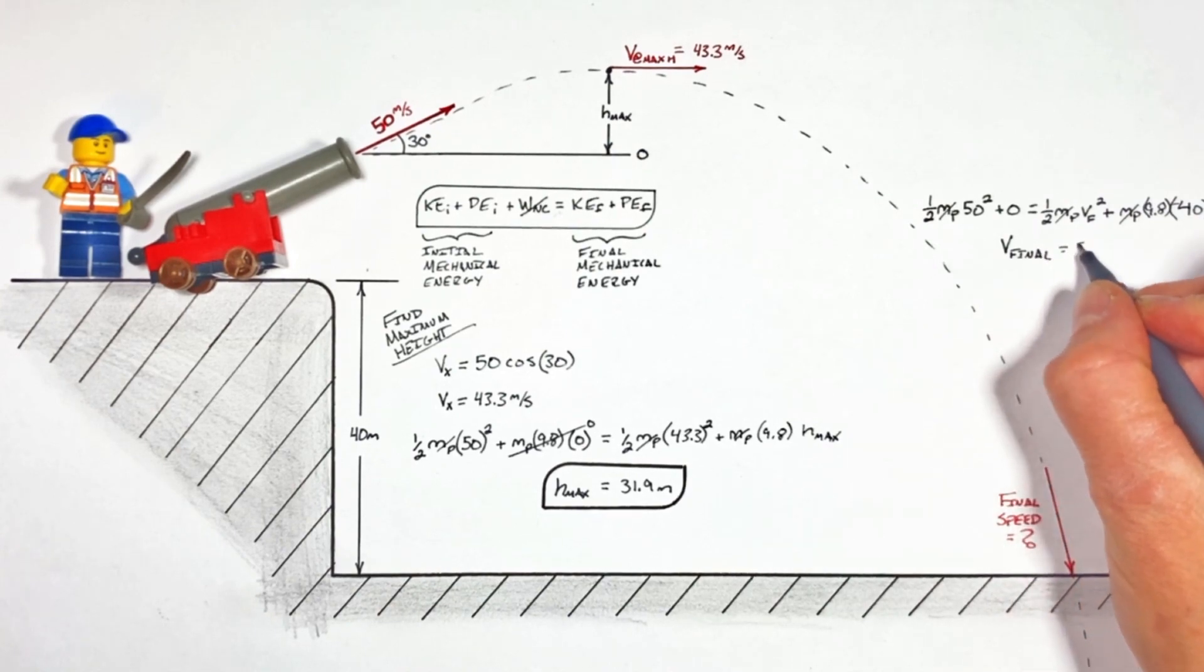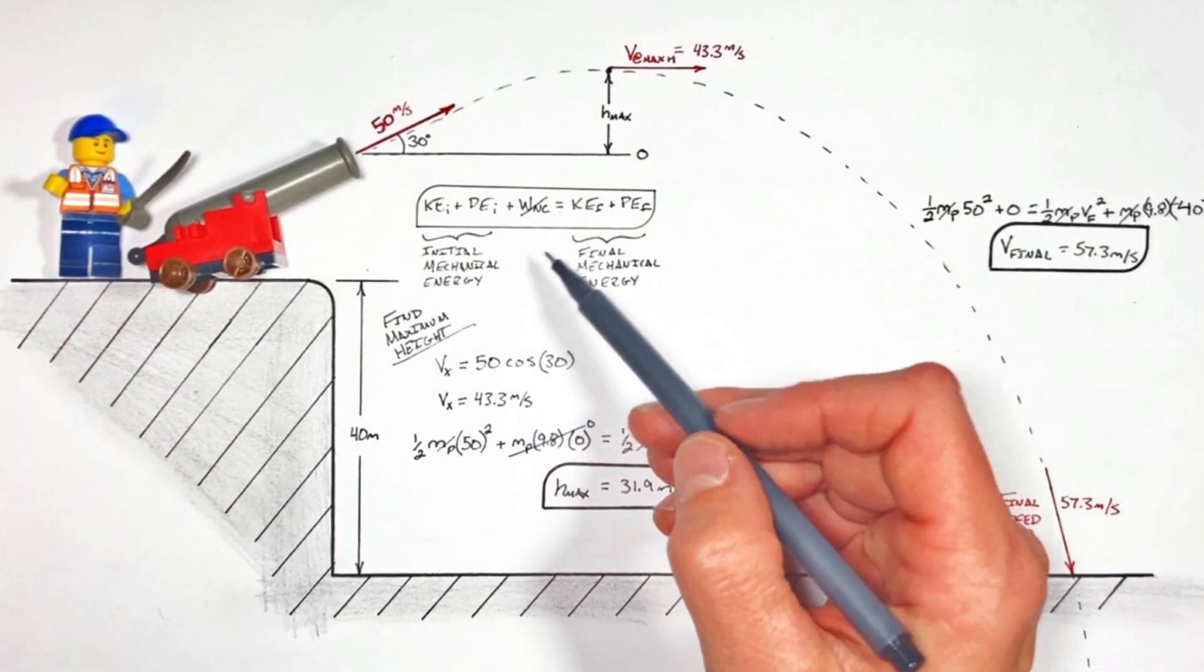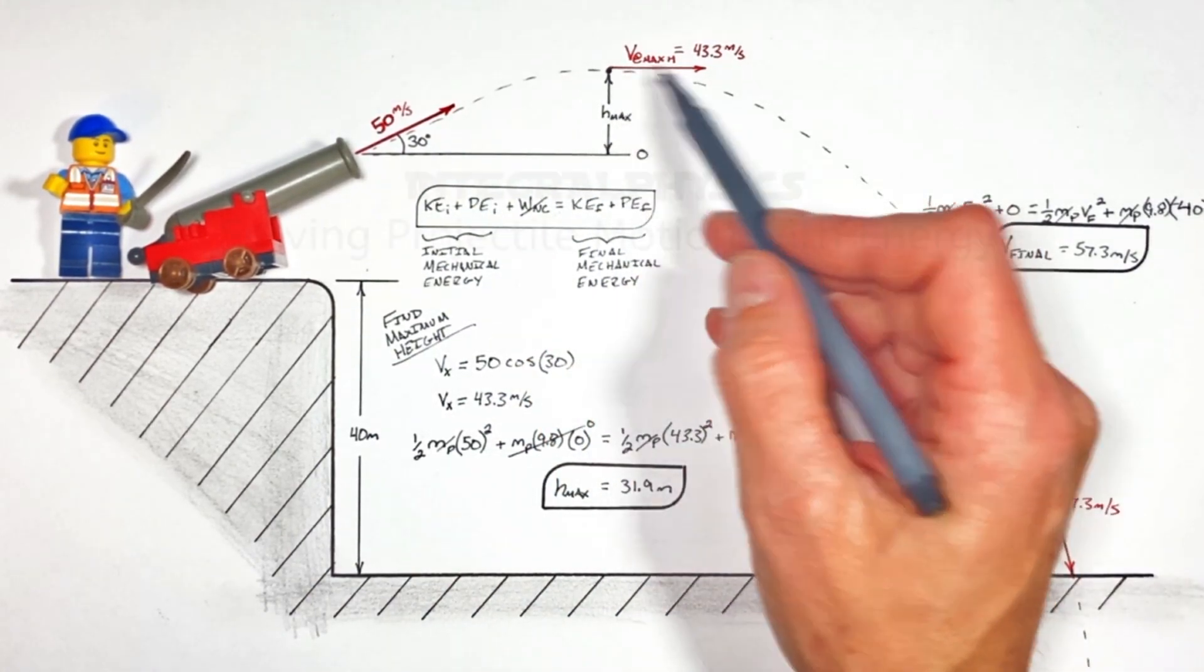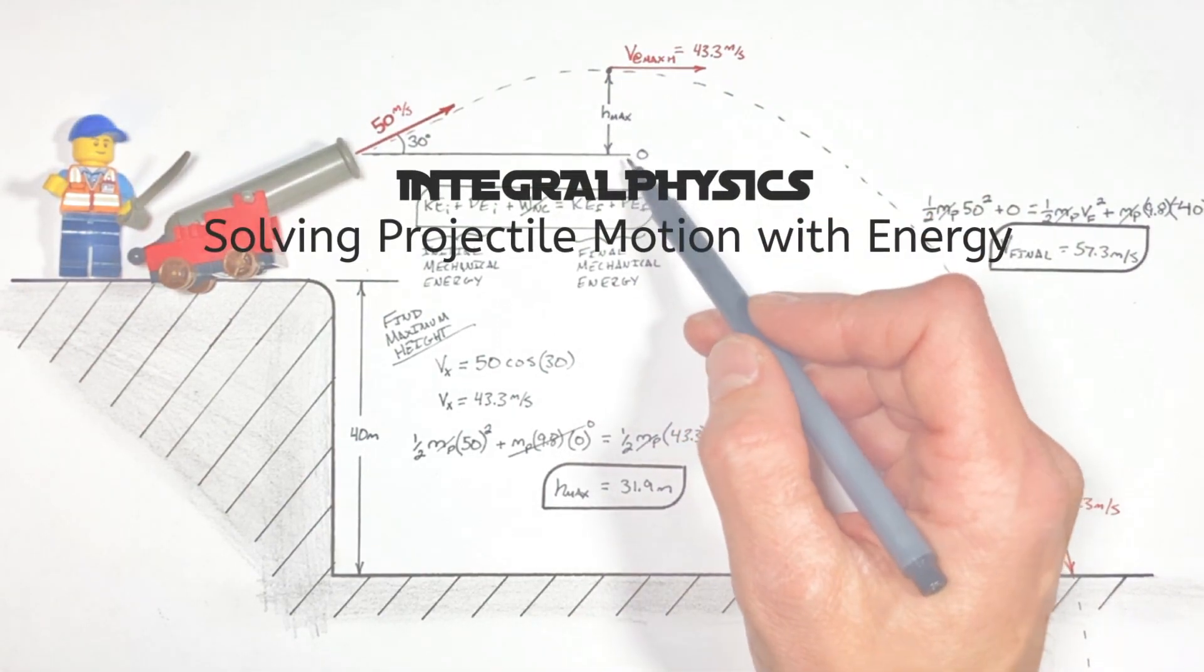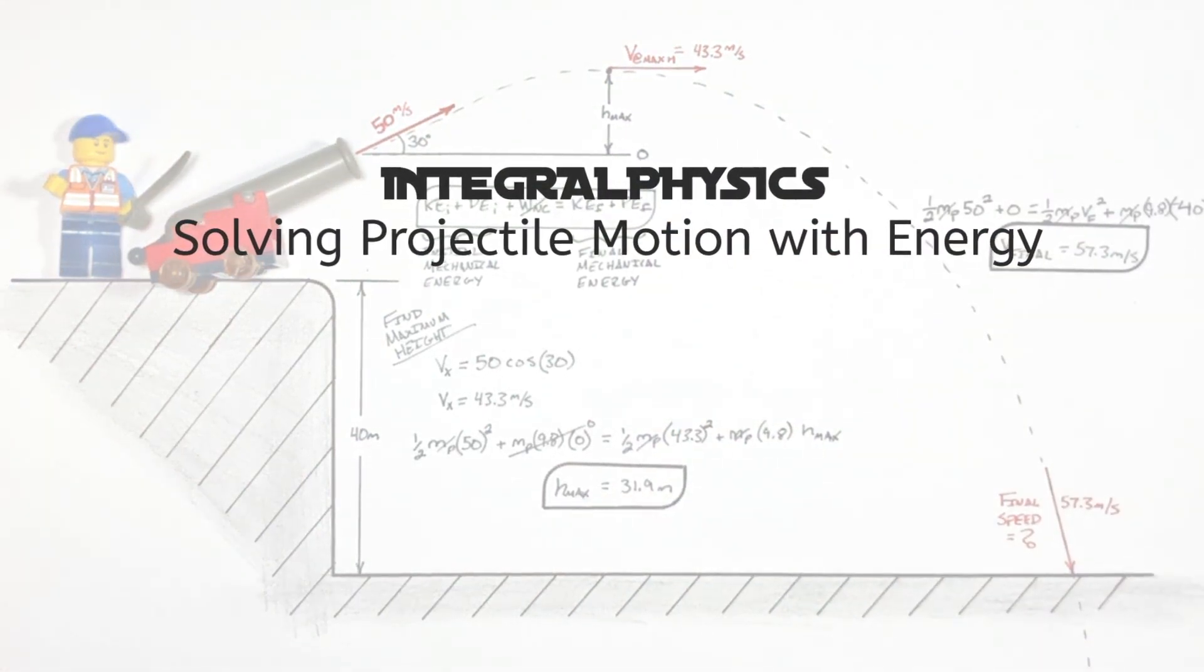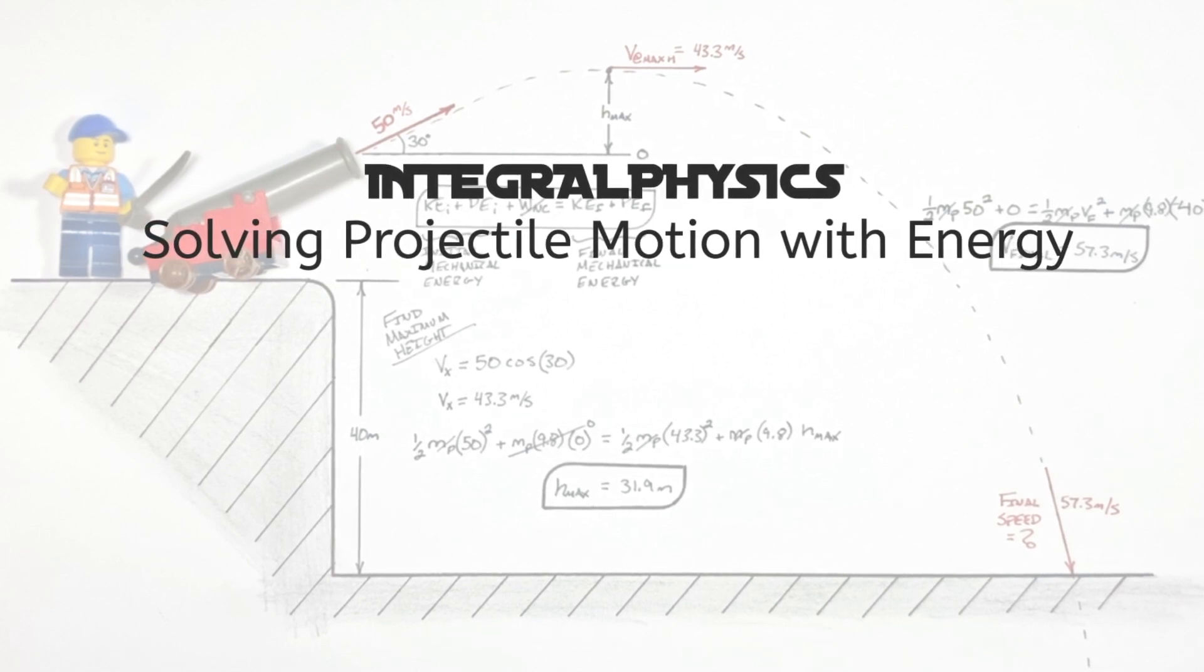Ultimately, we can apply the conservation of mechanical energy to projectile motion any time we're either given a velocity and want to solve for height, or we're given a height and want to solve for velocity. I hope you found this useful, and on that note, that's all for now.